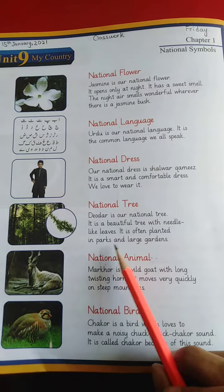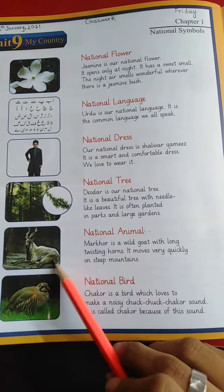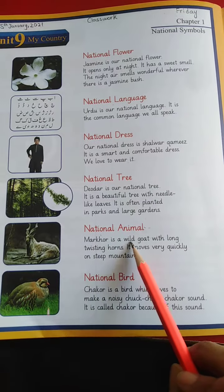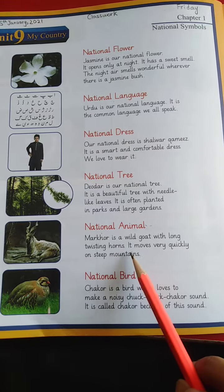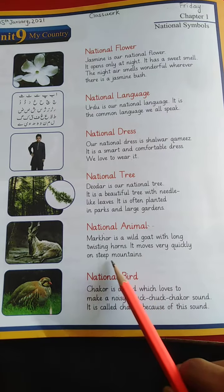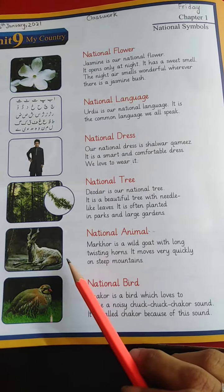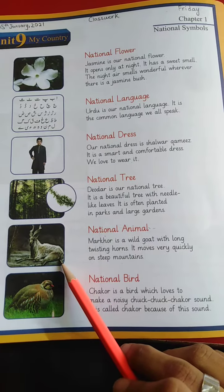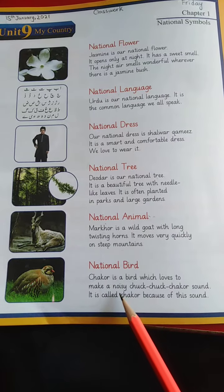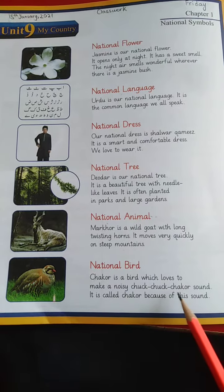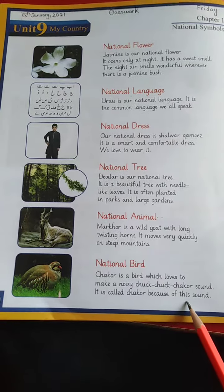National Animal: Markhor is our national animal. Markhor is a wild goat with long twisting horns. It moves very quickly on steep mountains. National Bird: Chakor is a bird which loves to make a noisy 'chuk chuk chakor' sound. It is called chakor because of this sound.